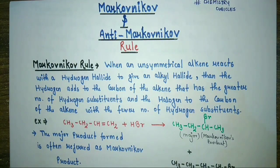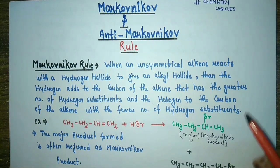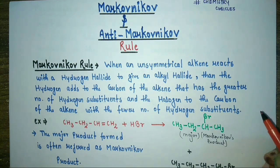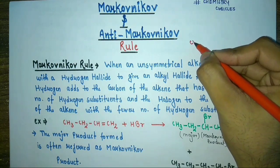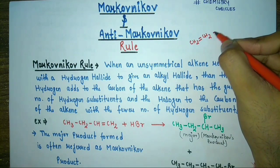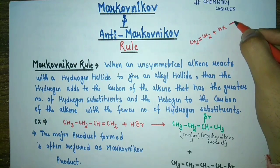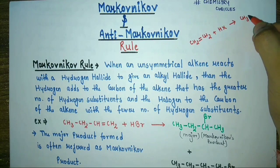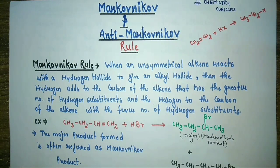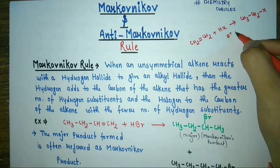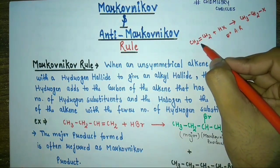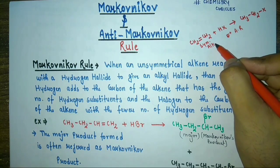Hello, welcome to Chemistry Cubicles. In this video, I am going to give you the complete knowledge of Markovnikov's and anti-Markovnikov's rule. I have told you already in the previous videos of haloalkanes and haloarenes that how haloalkanes are formed by the reaction of alkenes with hydrogen haloacids, just like CH2=CH2 plus HX to give CH3CH2X. This is a simple case of electrophilic addition reaction, applicable to symmetrical alkenes.